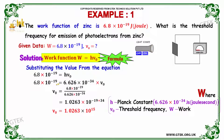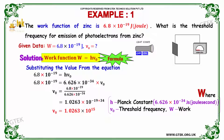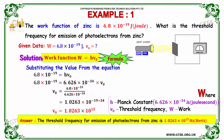So 6.8 × 10⁻¹⁹ = 6.626 × 10⁻³⁴ × ν₀. Therefore ν₀ = 6.8 × 10⁻¹⁹ divided by 6.626 × 10⁻³⁴. The value is ν₀ = 1.0263 × 10¹⁵. The threshold frequency for emission of photoelectrons from zinc is 1.0263 × 10¹⁵ Hz.